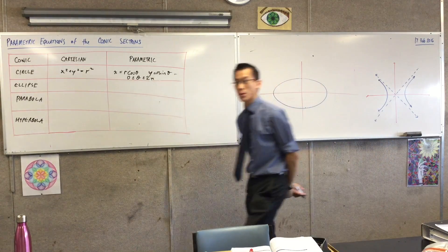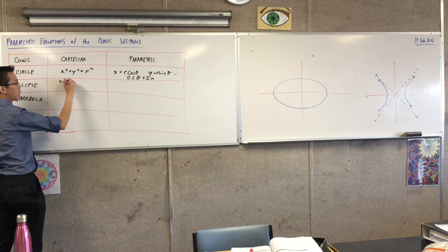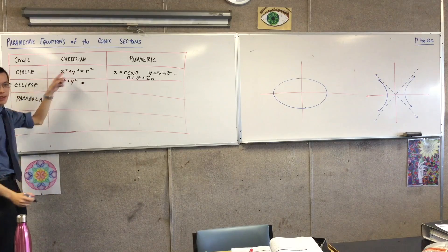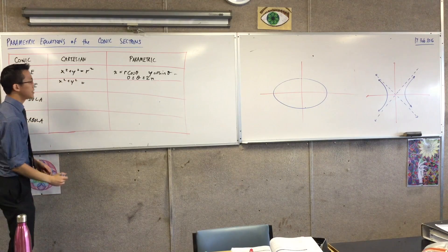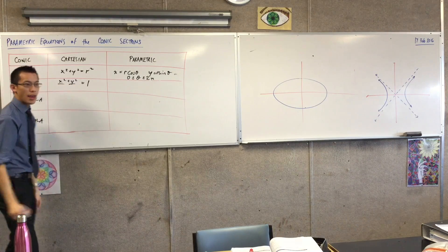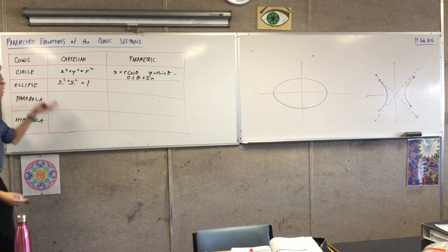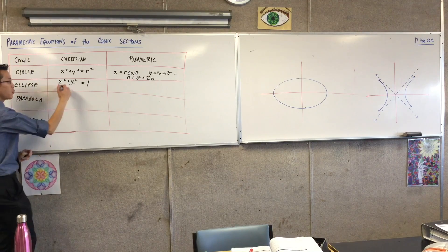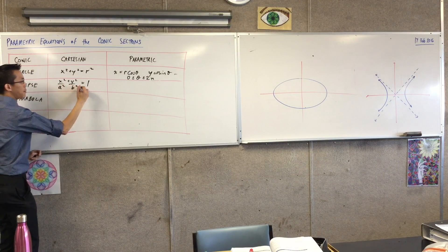So when we go to the ellipse, what changes? We still have the x squared plus y squared, but we don't frame it in these terms, do we? We tend to say, well, there's a 1 over here, and then we get some denominators. And we have different denominators, generally speaking, because if you don't have different denominators, you're back up in circle territory. So we've got our a squared and our b squared here.